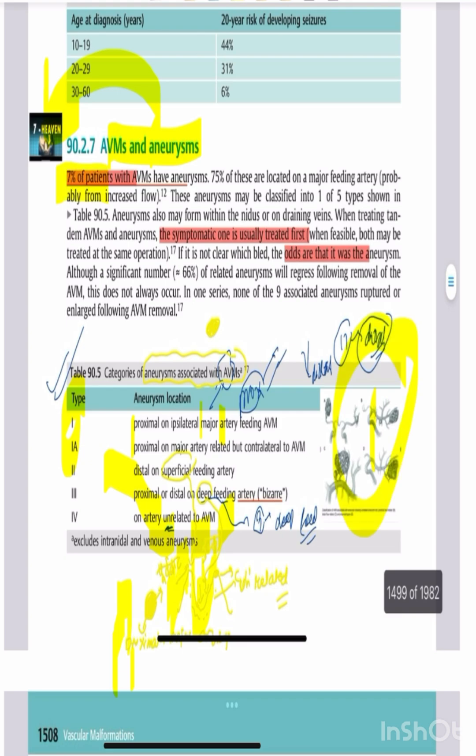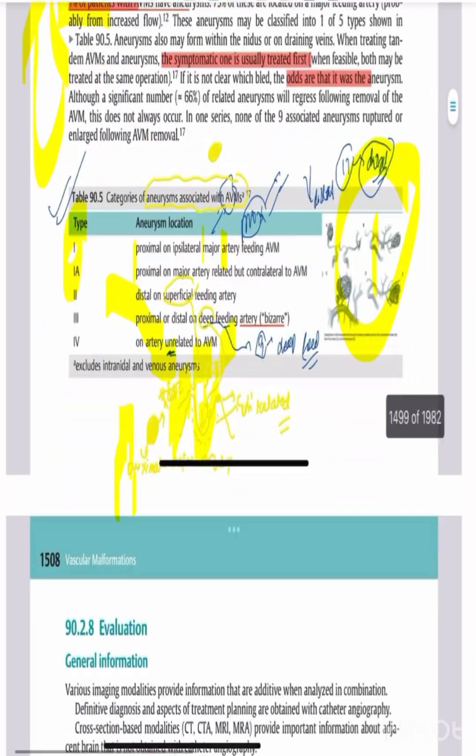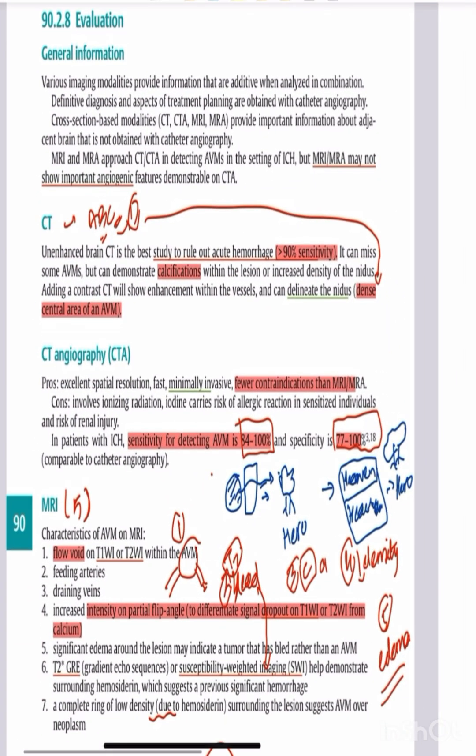The aneurysm associated with AVM is categorized by its location relative to the feeding vessels.